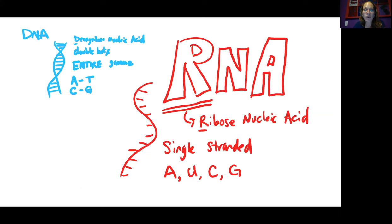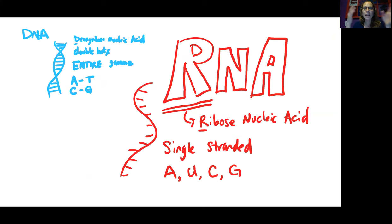RNA is a smaller molecule. It's single-stranded, and it's just going to be a copy of the instructions to make that one protein. So it's just the information of one gene, not the entire genome — not trying to copy the entire library, not even an entire book, maybe like one little page. So it's significantly smaller.